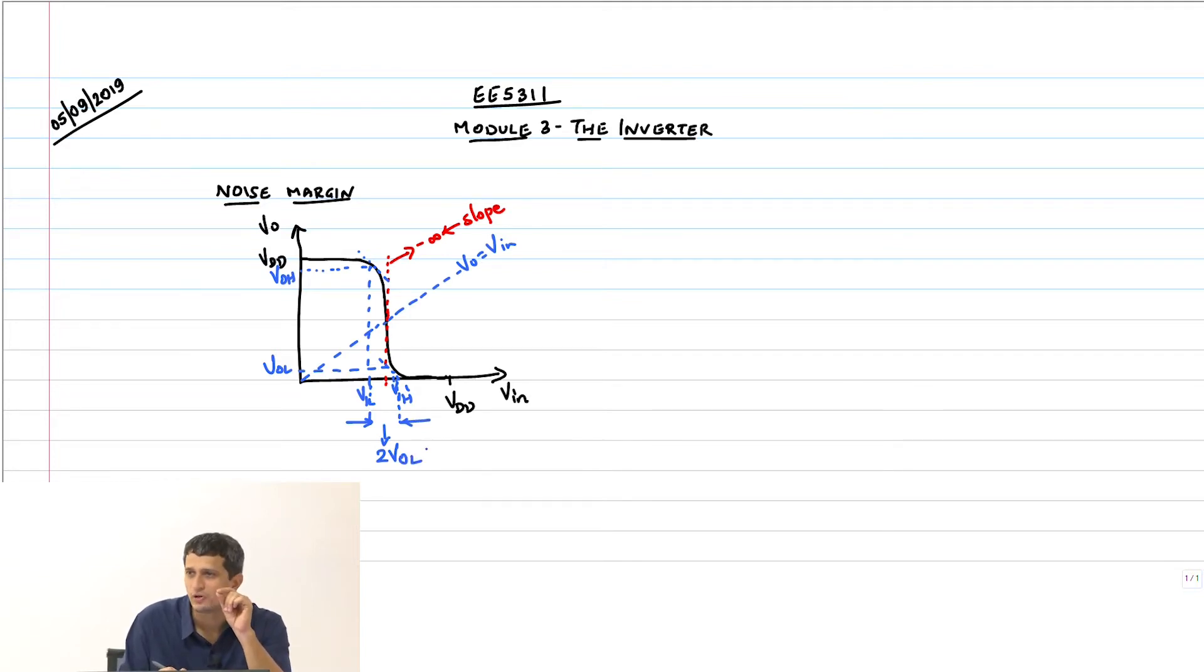Remember VOL is actually very close to 0 as you can see here. I have drawn it a little exaggerated, it is very close to 0. This region where the input is indeterminate is just 2 VOL, and this is not surprising because the slope at Vin = Vout is minus infinity.